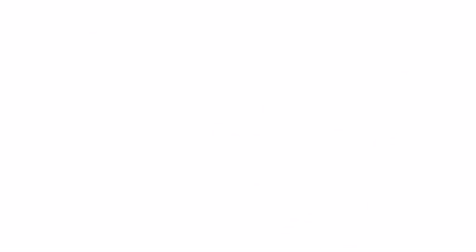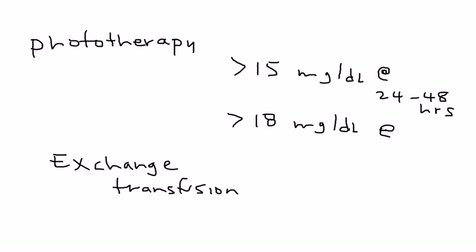Now I wanted to give you an indication of when phototherapy is used in terms of bilirubin values. Here are the cutoffs. Phototherapy is used if the bilirubin levels are greater than 15 mg per deciliter between 24 and 48 hours of life. If they are greater than 18 mg per deciliter between 49 and 72 hours of life, you use phototherapy. And if the bilirubin level is greater than 20 mg after 72 hours of life.